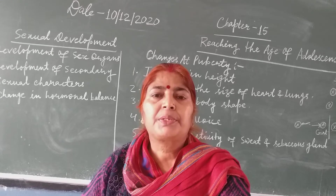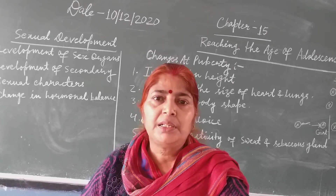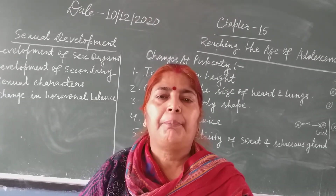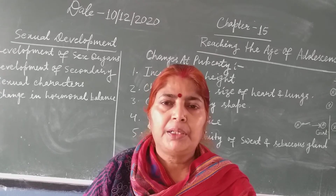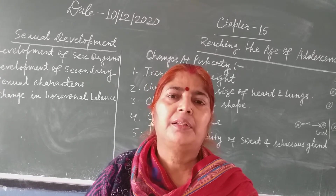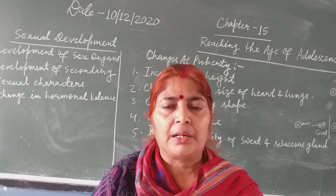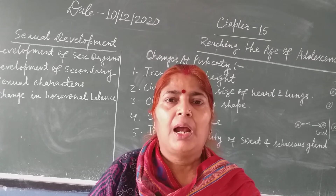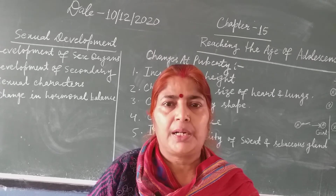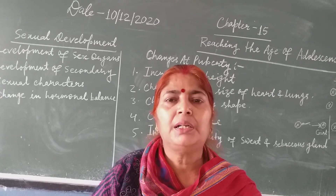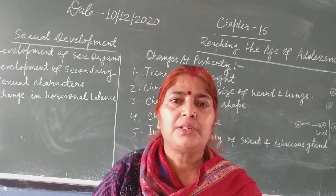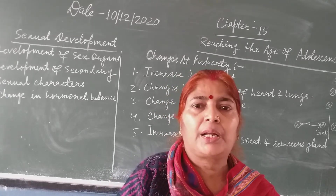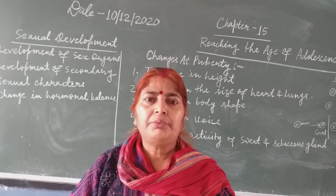The next change is the development of secondary sexual characters. In boys, there is the appearance of beard, mustache, and pubic hair in the armpit and genital region. In girls, there is development of breasts and pubic hair also arises in the armpit and genital region. These changes are called secondary sexual characters, and they develop during the age of puberty.